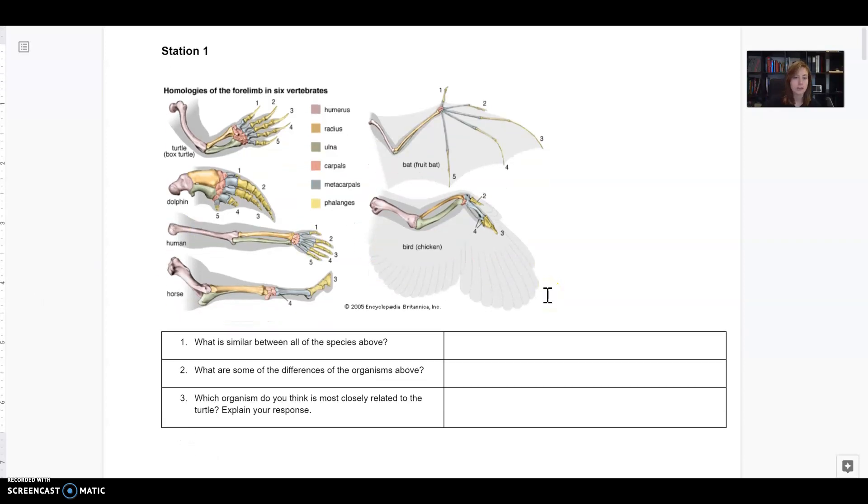So first here we have a bunch of limbs from different animals. We have a human arm, a dolphin fin, a turtle leg, a horse leg, right? And all of them have the same bones.